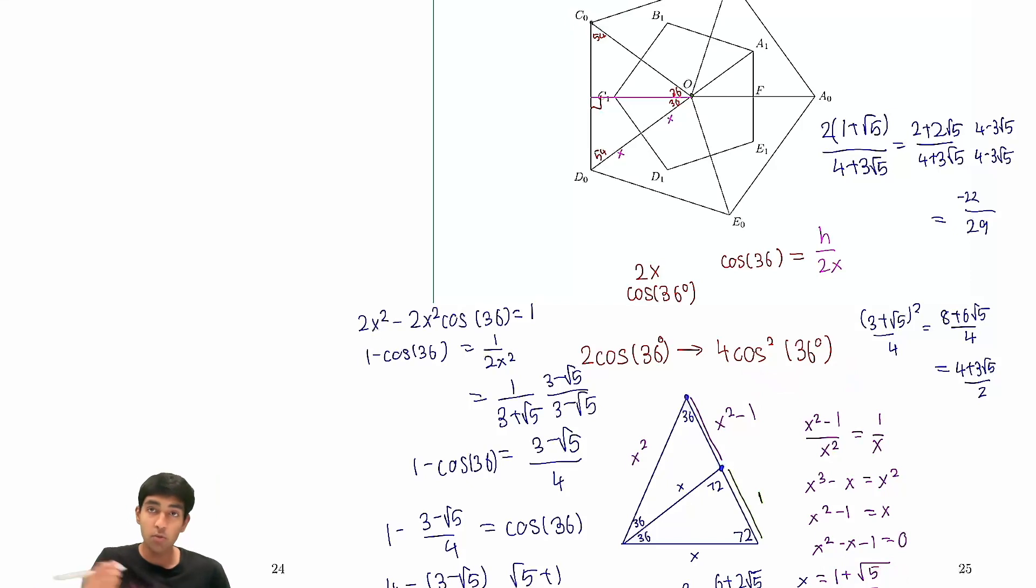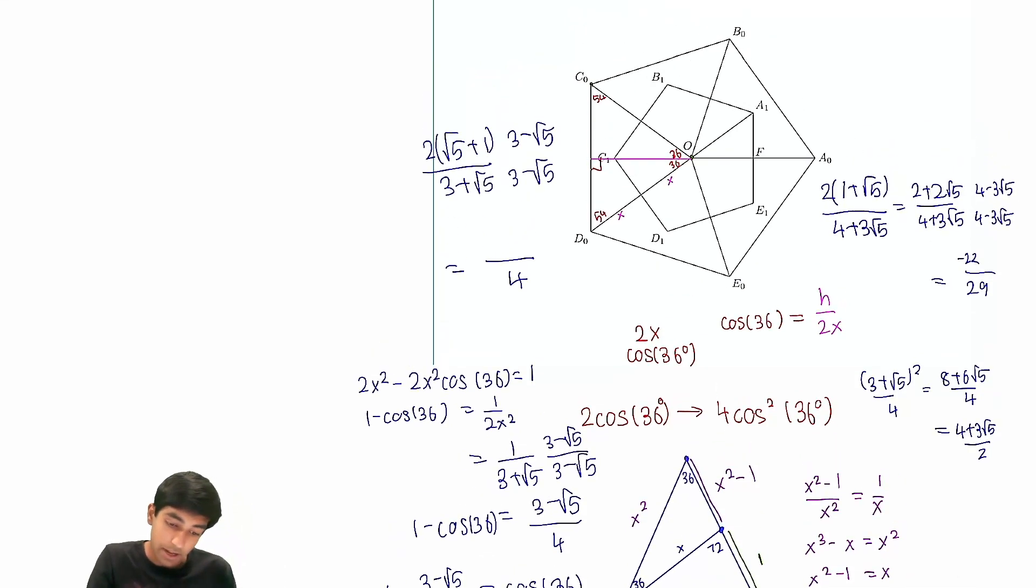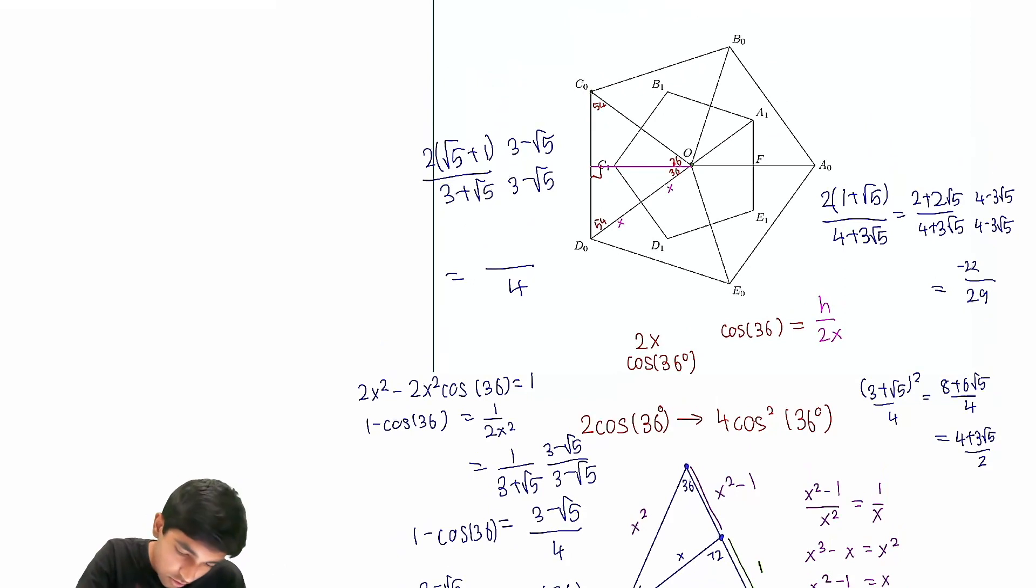So the scale factor between these two pentagons, the area, is 3 plus √5 all over 2. So we just divide that, take this, divide by 3 plus √5 over 2, or we can just do this. And now it's pretty easy, right? We just do rationalization. And then we get over 4 in the denominator.